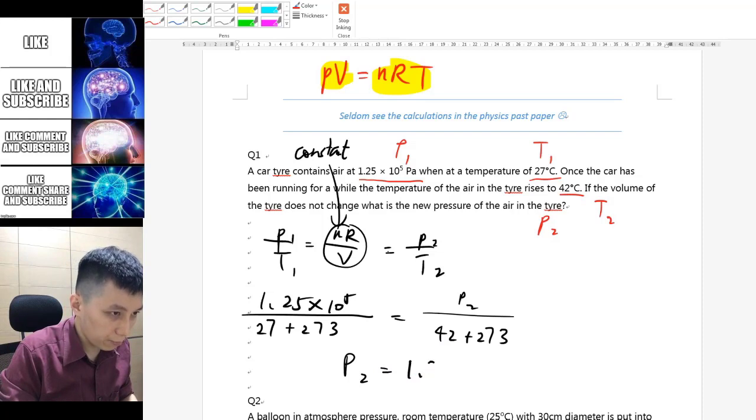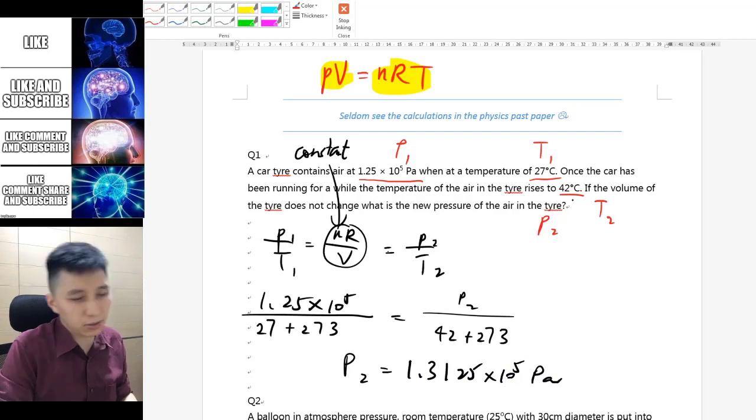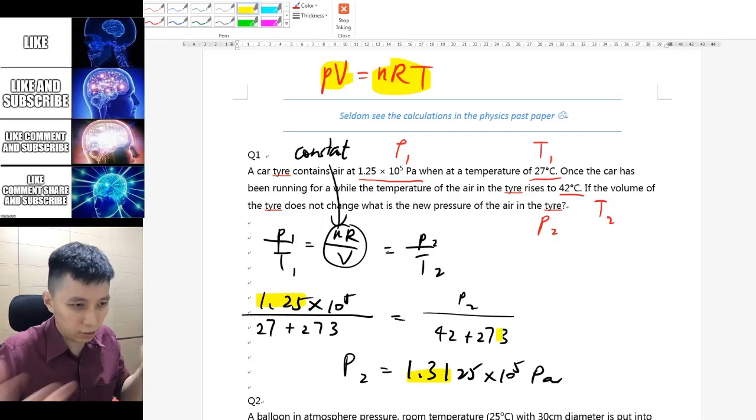The rest will just be a calculation job, so you should have something like 1.3125 times 10 to the power of 5 pascal. That makes sense because when you increase temperature then the pressure should also increase. If you look at 1.25 to 1.31, it does increase by a tiny bit.